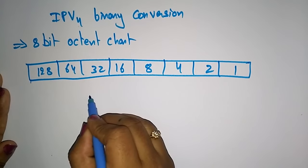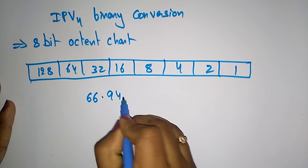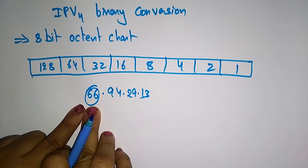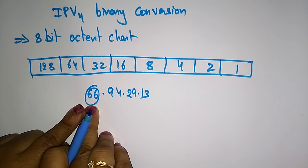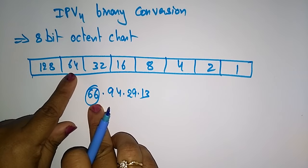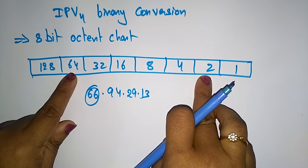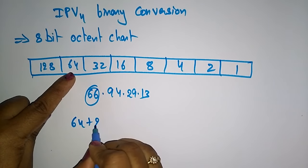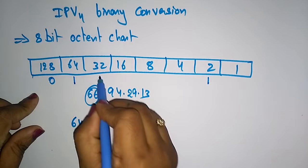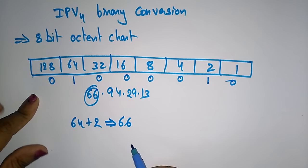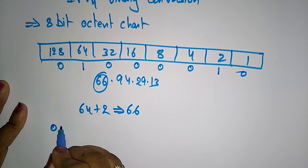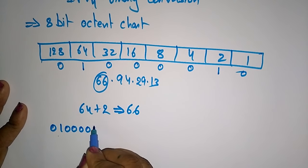Let me take the decimal number 66.94.29.13 and convert the first octant, 66, into binary. 66 equals 64 plus 2. So just place a 1 in the 64 position and a 1 in the 2 position, with all remaining bits as 0. The binary conversion of 66 is 01000010.